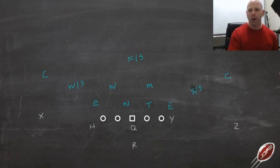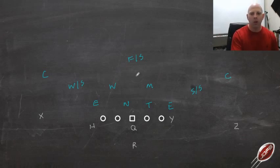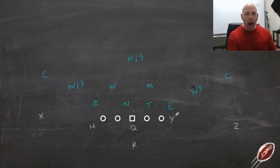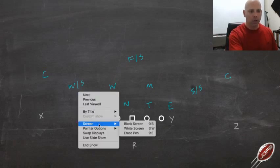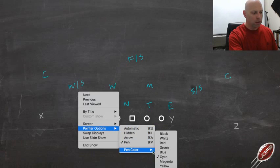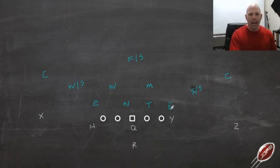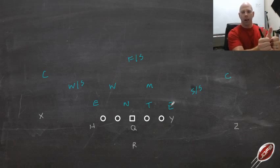So let's talk about the 6-technique. Why do we like the 6-technique defensive end? Our defensive end is going to be the C-gap player. What we're going to have him do is attack and strike the tight end. As he does that, his eyes are going to be looking inside at the tackle. So he has a pressure key from the tight end and a visual key on the hip of the tackle.